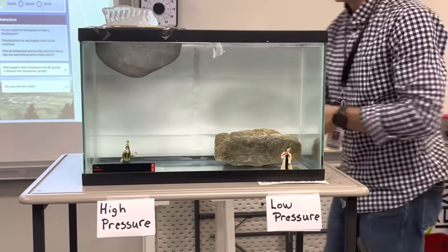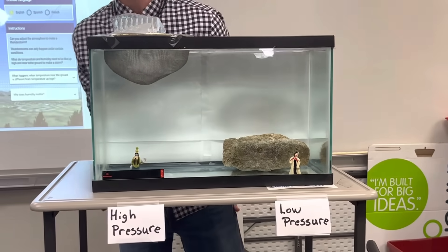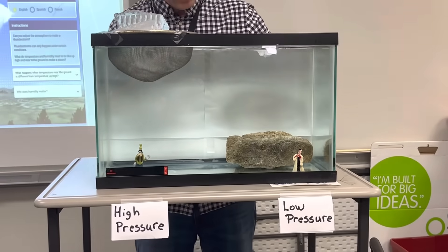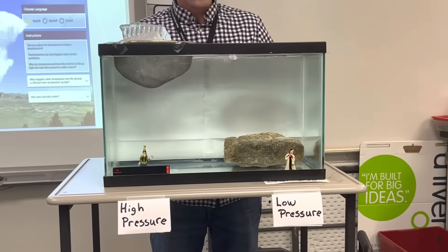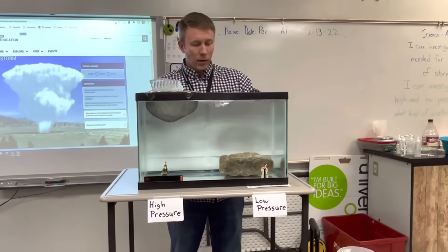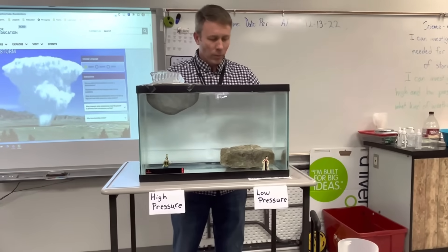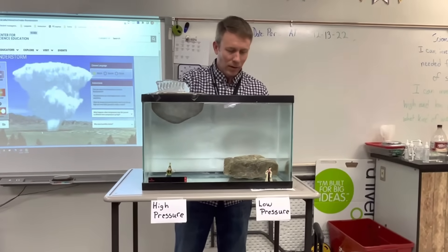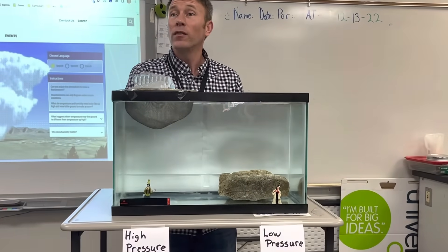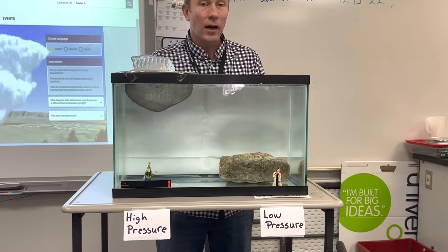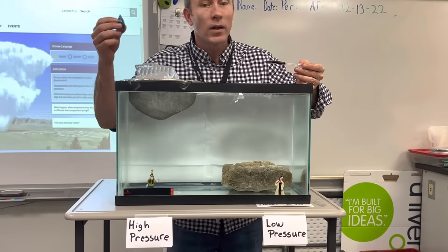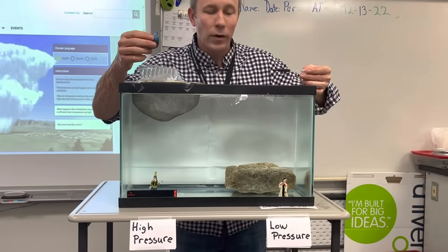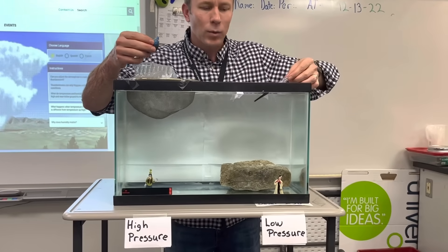Right now we really don't see anything, but the beautiful thing about using water to represent our atmosphere is I can go ahead and put some food coloring in it so we can see the movement in our model atmosphere. I'm going to inject some red food coloring on our warm earth side and some blue food coloring in our cold upper atmosphere side, and let's watch what happens.